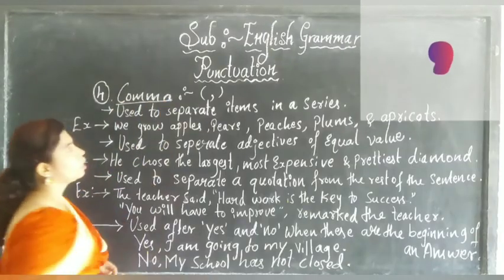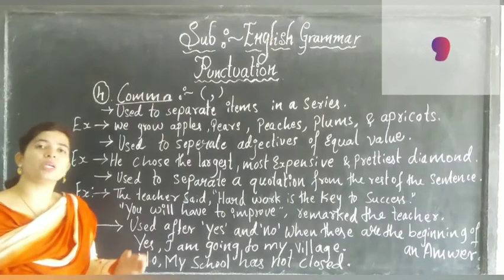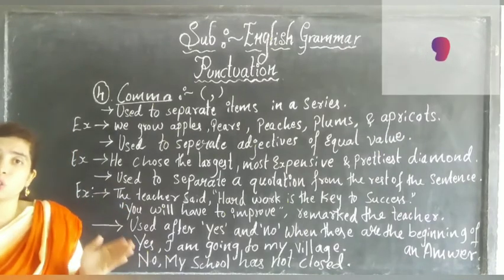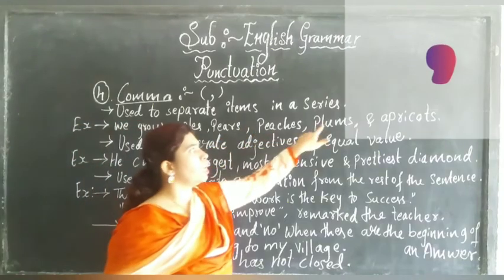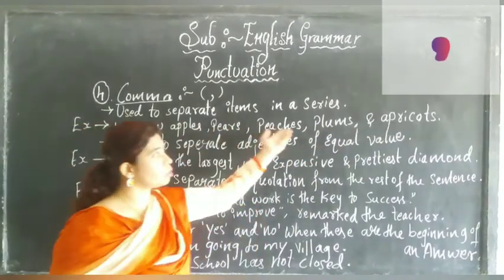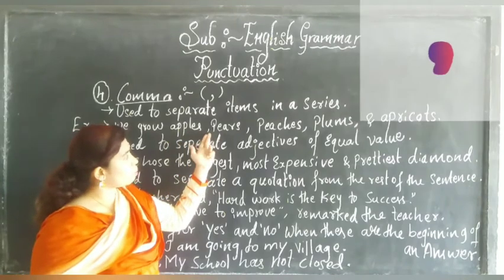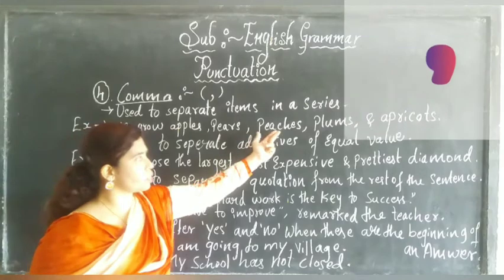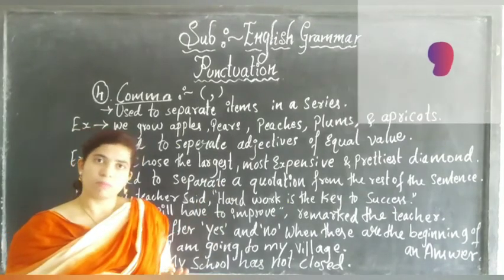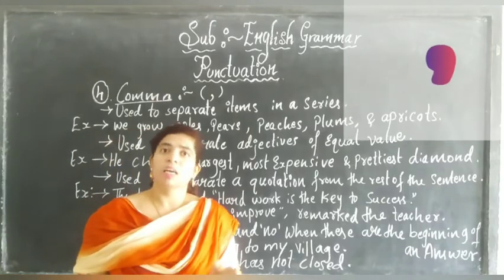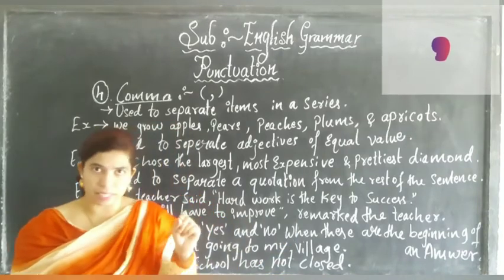Now coming to the fourth punctuation: comma. Comma is used to separate items in a series. When we are mentioning two or three items in a particular series, we put a comma after each item. For example, 'We grow apples, pears, peaches, plums, and apricots.' We use a comma after every item, and a full stop at the end.